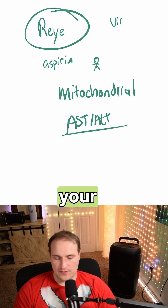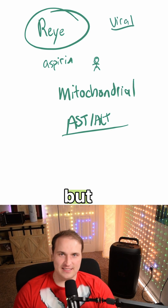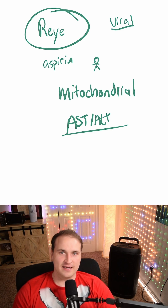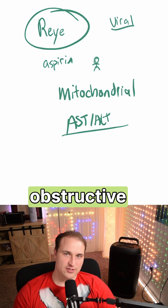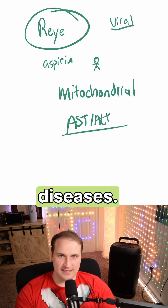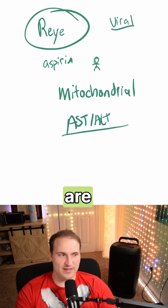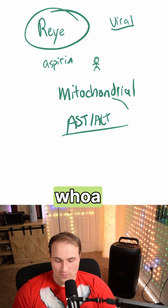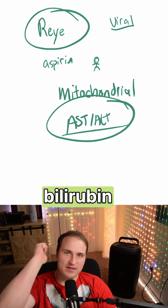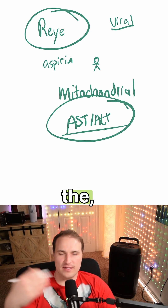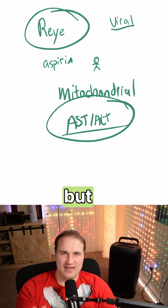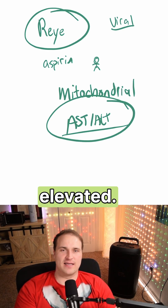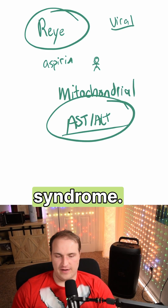Other things on your differential are going to be viral hepatitis, but bilirubin is usually going to be clearly elevated in viral hepatitis. In obstructive and cholestatic diseases, both the bilirubin and the ALP are going to be high. But in Reye's syndrome, the AST and ALT are super sky-high, the bilirubin is pretty normal — maybe on the higher end but still normal — and ALP is only mildly elevated. That pattern is Reye's syndrome.